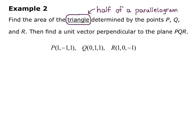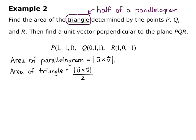We have point P = (1, -1, 1), Q = (0, 1, 1), and R = (1, 0, -1). The area of the parallelogram determined by these would be the magnitude of u cross v, so the area of the triangle is the magnitude of u cross v divided by 2, since the triangle is half the parallelogram. We pick P as the base point, so u = vector PQ and v = vector PR, and we find a vector by doing the ending point minus the starting point.